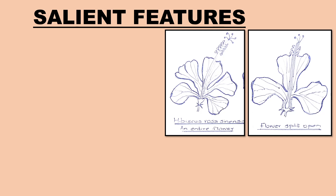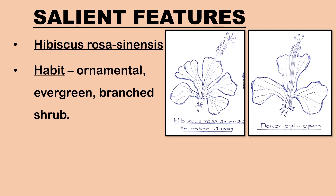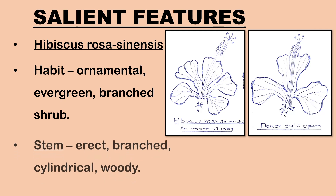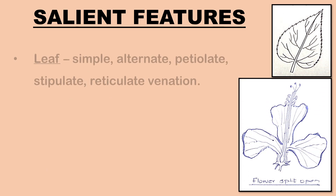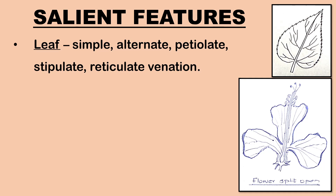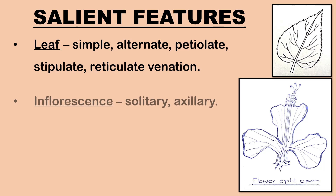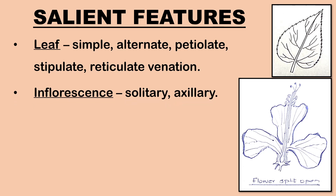Now let us study the salient features of Hibiscus rosa-sinensis. Habit: an ornamental, evergreen, branched shrub. Stem is erect, branched, cylindrical, woody. Leaf: simple, alternate, petiolate, stipulate with reticulate venation. Inflorescence: solitary, axillary.